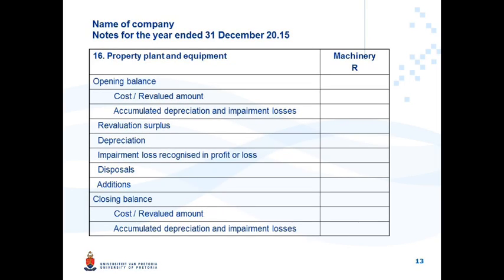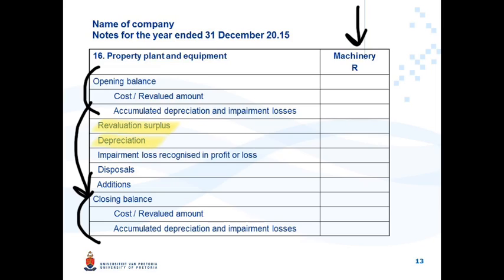This is an example of the Property, Plant and Equipment Note that supports the line item presented on the face of the Statement of Financial Position — this is referred to as the Disclosure in the PPE Note. In this note you have to indicate a reconciliation between the opening carrying amount and the closing carrying amount of each class of Property, Plant and Equipment. This reconciliation includes specific line items including revaluation surplus or deficit, depreciation for the year, impairment losses recognized in profit or loss or OCI, disposals and additions. Note: impairment losses is the topic covered in IAS 36 later, and you will need to refer back to this PPE Note after completing that topic.